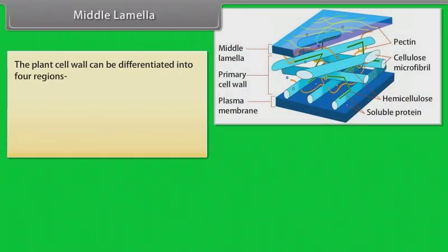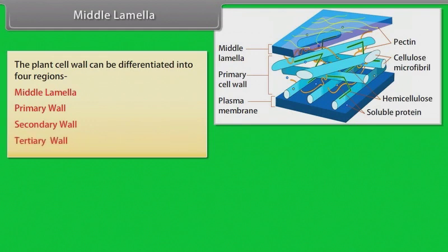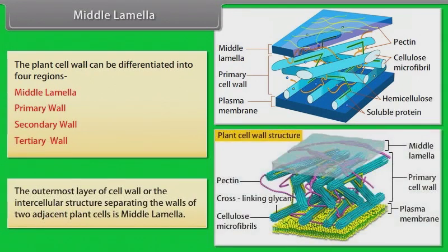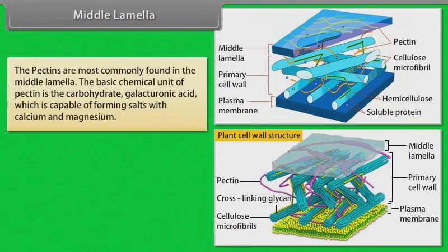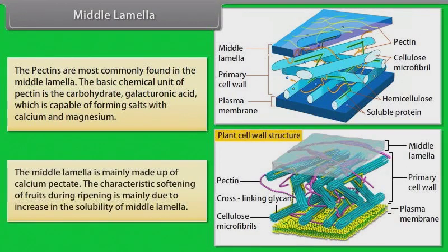The plant cell wall can be differentiated into four regions: middle lamella, primary wall, secondary wall, and tertiary wall. The outermost layer, or intercellular structure separating the walls of two adjacent plant cells, is the middle lamella. Pectins are most commonly found in the middle lamella; the basic chemical unit of pectin is the carbohydrate galacturonic acid, which is capable of forming salts with calcium and magnesium. The middle lamella is mainly made up of calcium pectate, and the characteristic softening of fruits during ripening is mainly due to increased solubility of the middle lamella.